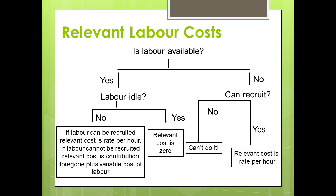First of all, you need to do a job and you need labor. So the first question is: do you have labor available? If yes, is there any spare capacity? Like workers on contract who are at the factory for eight hours a day — sometimes you use eight hours, sometimes only six. You're paying them anyway. So is the labor idle? If yes, then the relevant cost is zero.